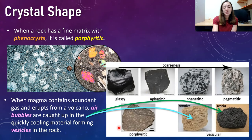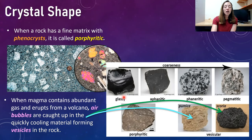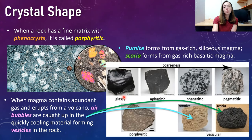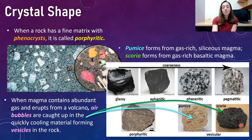The last texture we will talk about today is vesicular. We see two rocks shown here: pumice and scoria. Both of these vesicular textures — textures with vesicles — form when magma contains abundant gas and erupts from a volcano, causing those gas bubbles to be caught up in the cooling material, forming vesicles in the rock. Pumice specifically forms from gas-rich siliceous magma, which is why it's lighter in color. Scoria forms from gas-rich basaltic magma, so scoria is basically the mafic version of vesicular rocks, and pumice is the felsic version.